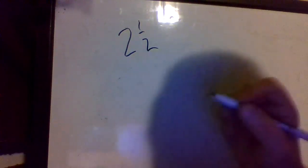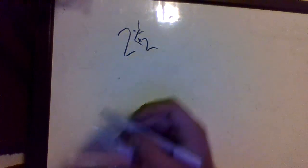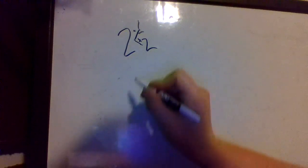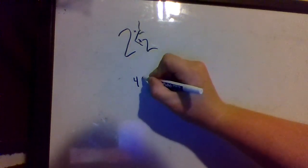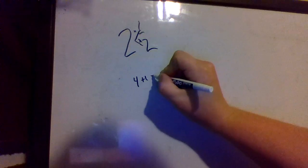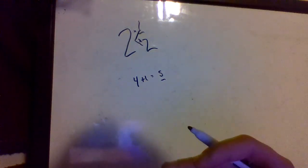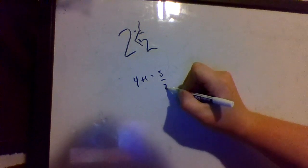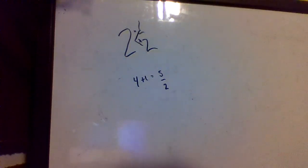And the way we do that is we go here and here. We multiply here and we add here. So if we multiply the denominator times the whole number, we get 4, and you can write that down if you'd like. And then we add the numerator. 4 plus 1 is 5. And now we're gonna keep our denominator: 5 over 2.